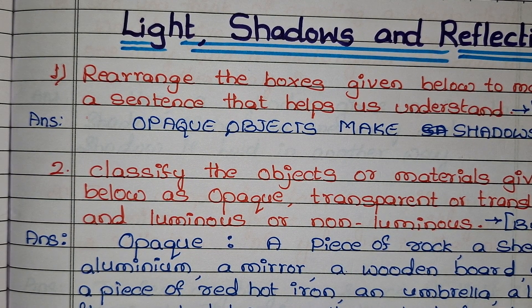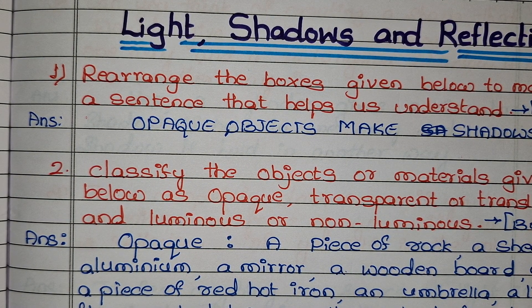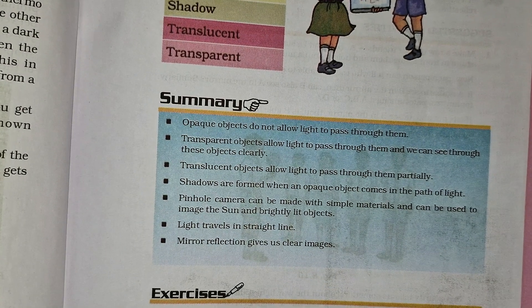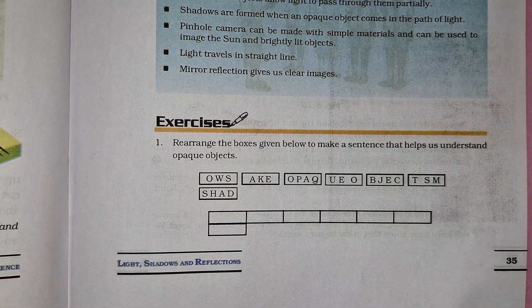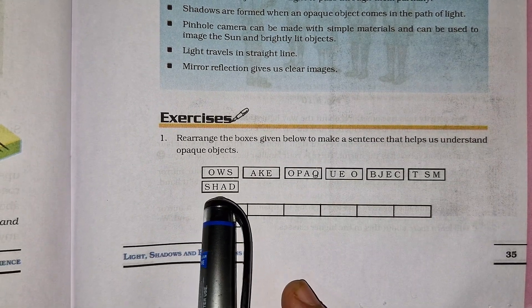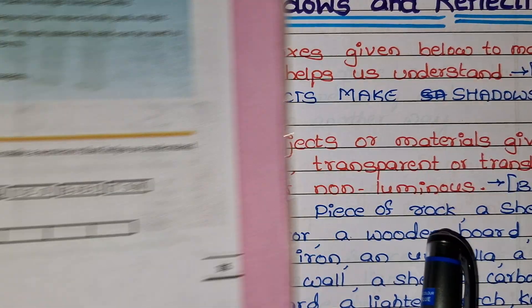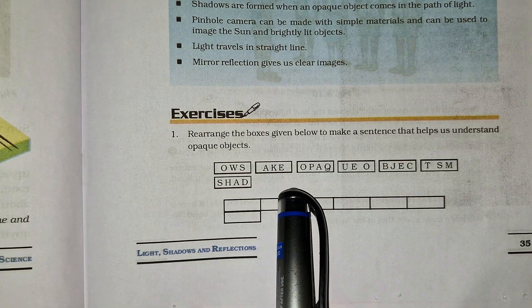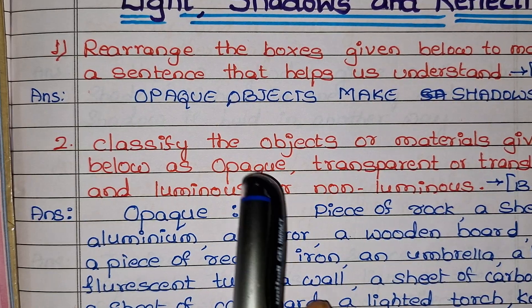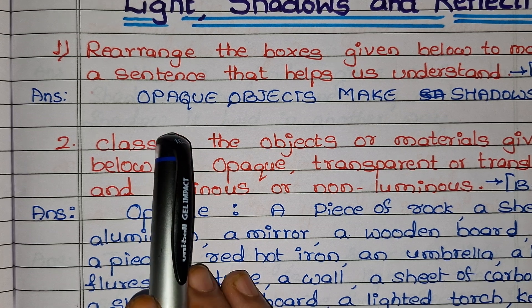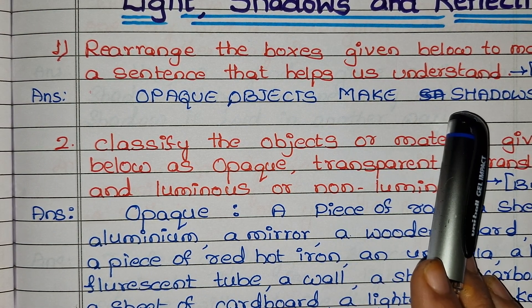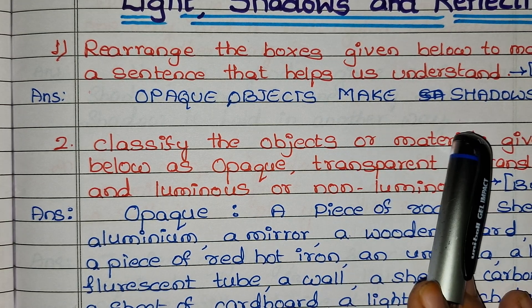Rearrange the boxes given below to make sentences that help us understand. In the box, letters are jumbled. We have to make it very meaningfully, so that it can be understood. The answer is: Opaque objects make shadows.